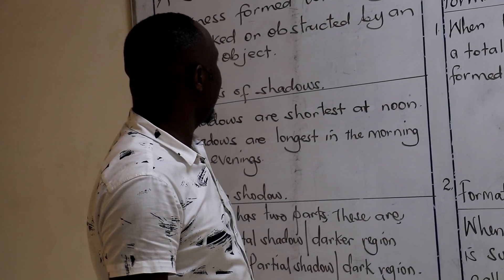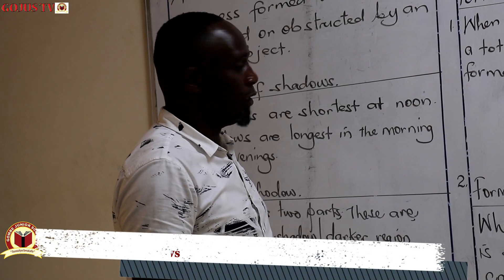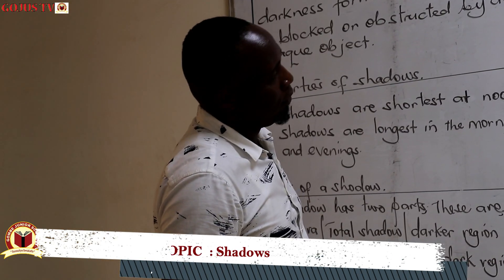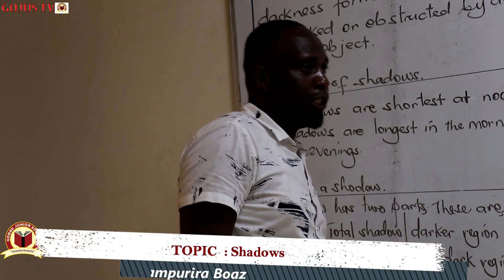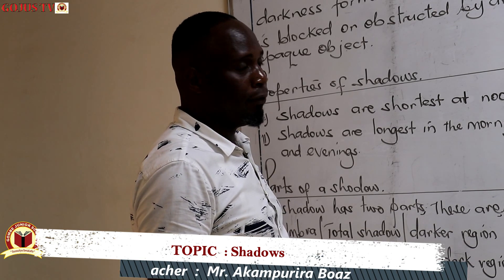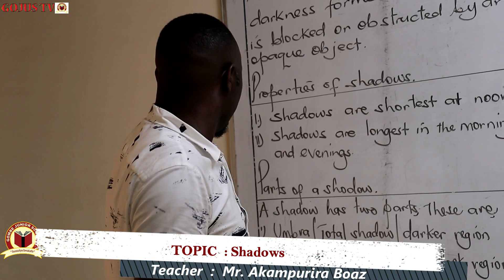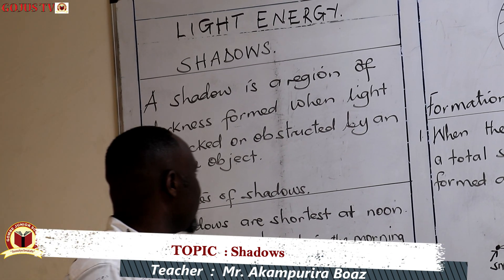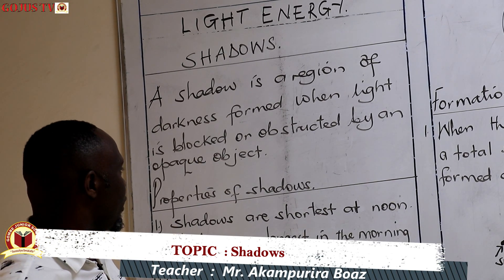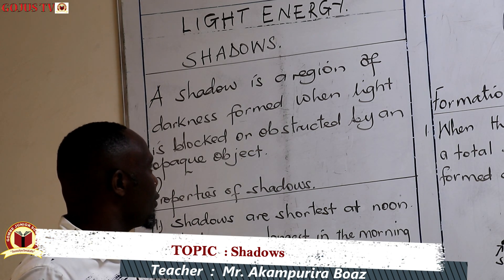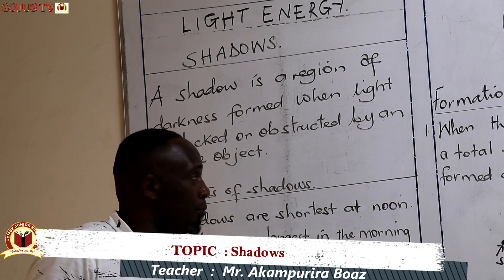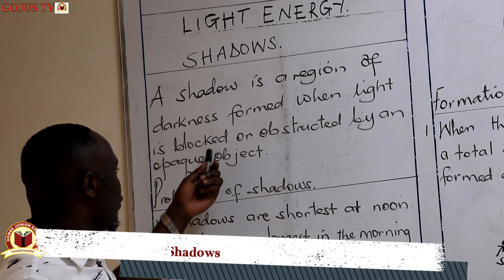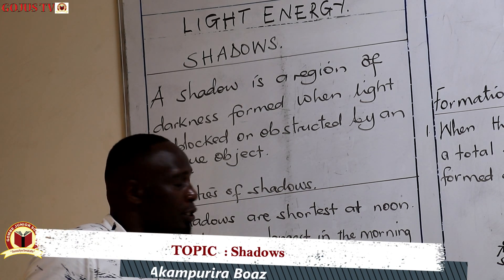Welcome back, dear candidates. In the previous session we looked at the effect that some materials have on light. One of them was opaque objects, and we said that these objects block or obstruct light and form shadows. So here we are talking about shadows. A shadow is a region of darkness formed when light is blocked or obstructed by an opaque object. A shadow is formed when light is blocked by an opaque object — you may use 'obstructed' or 'blocked'; both can apply.